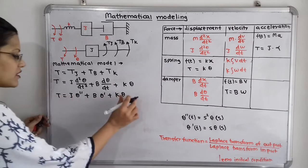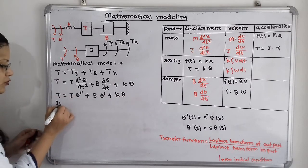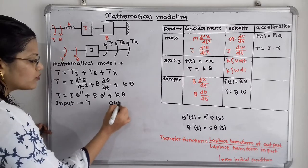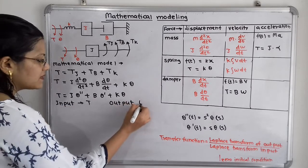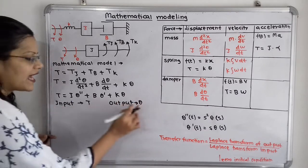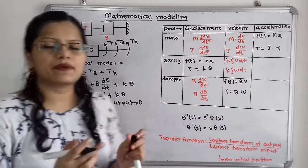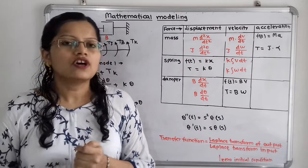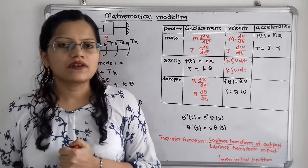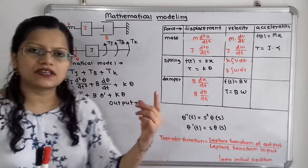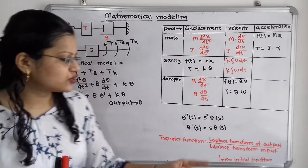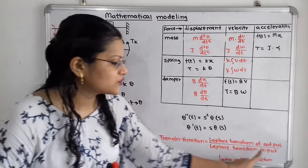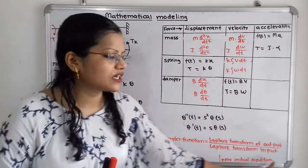If we observe this formula, T is the input and theta — the angular displacement — is the output. Both are variables that vary with time. To obtain the transfer function, we use the formula: transfer function is the ratio of the Laplace transform of output to the Laplace transform of input with zero initial conditions.